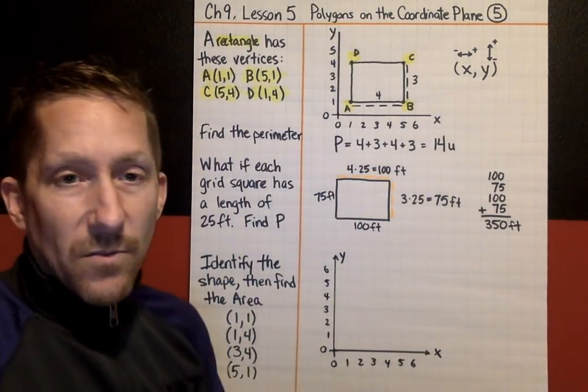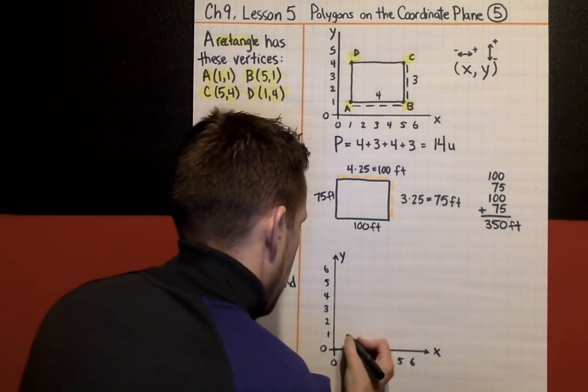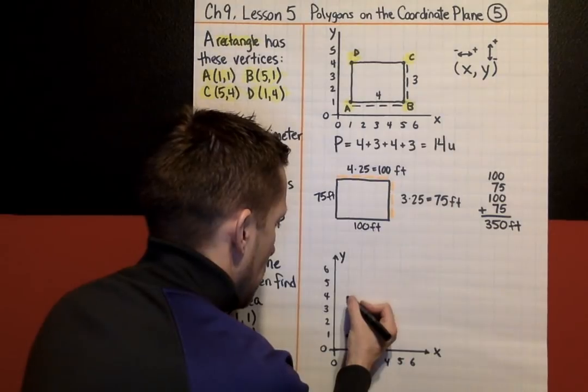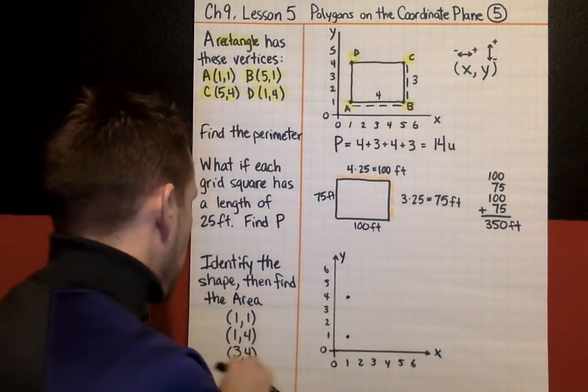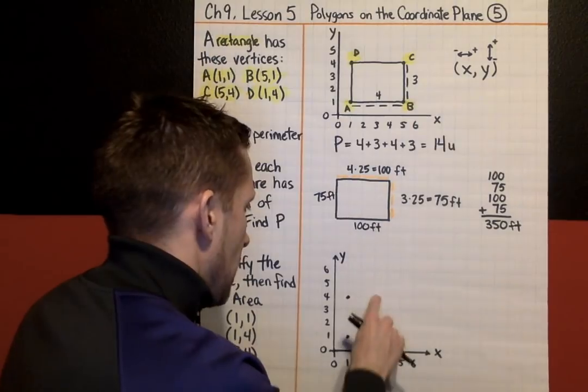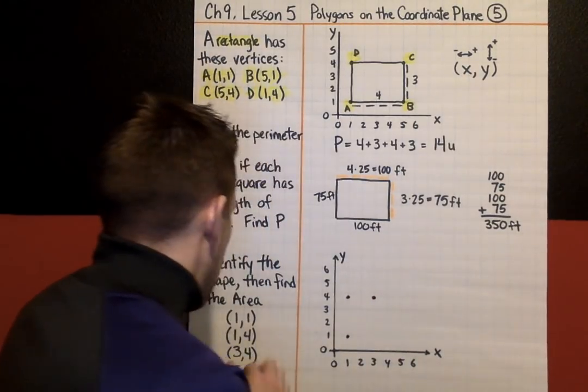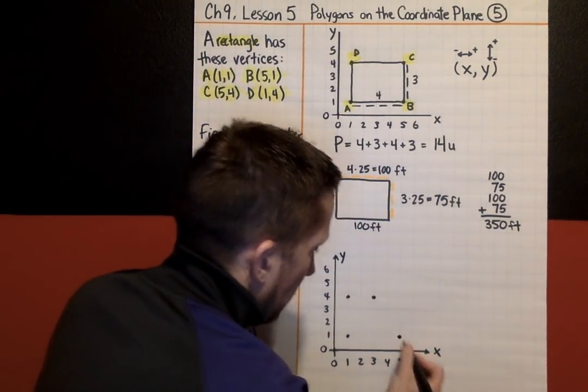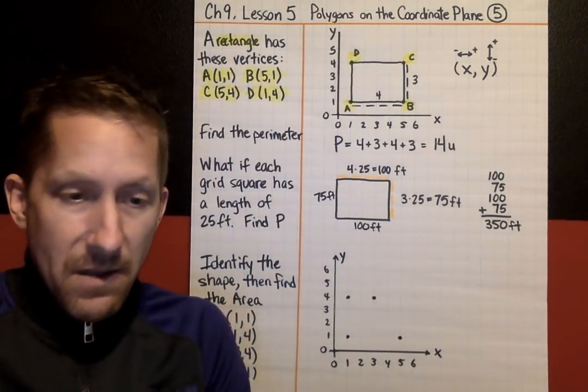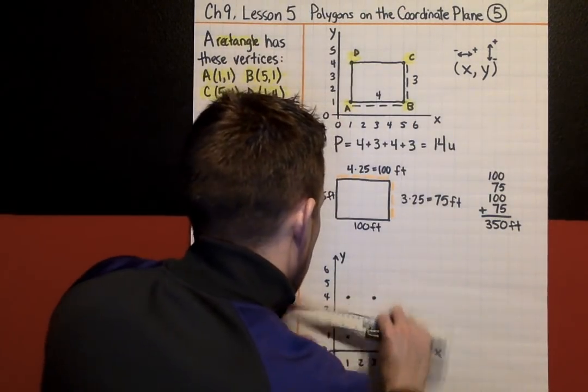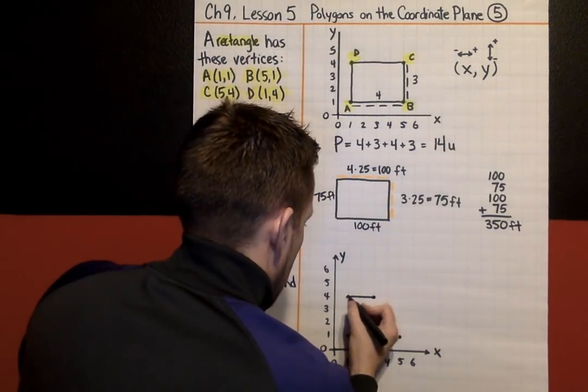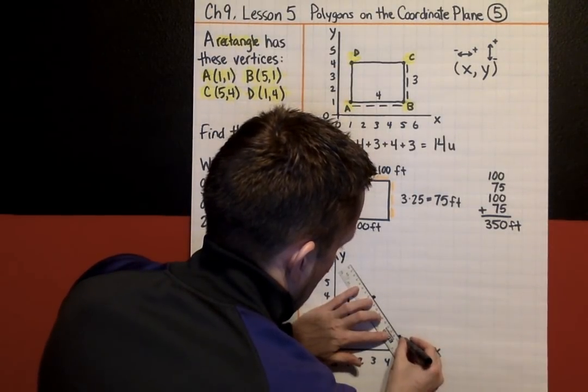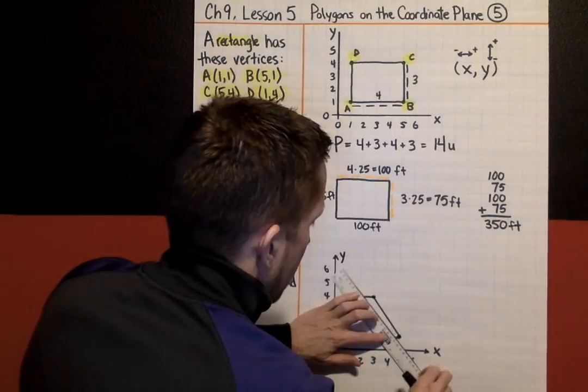The first point that we're going to put on our coordinate plane: (1,1), so that is going to be right here. (1,4), so I'm going to go over 1, up 4. (3,4), over 3, up 4, and then (5,1), out to 5, over 5, up 1. So, there is our shape. I'm going to connect these dots, and there's our shape.